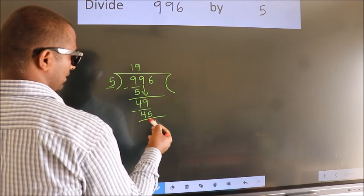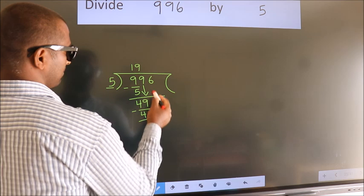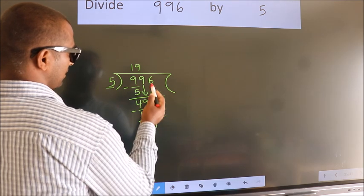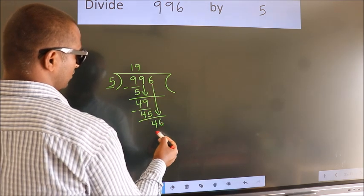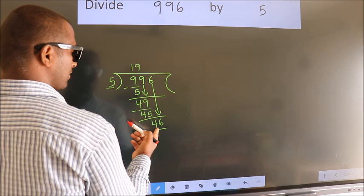We get 4. After this, bring down the beside number, so 6 down, so 46. A number close to 46...